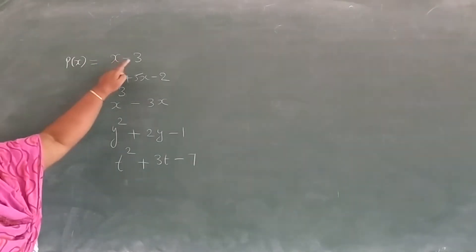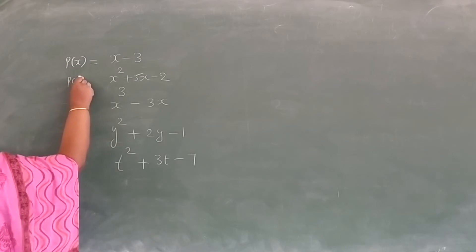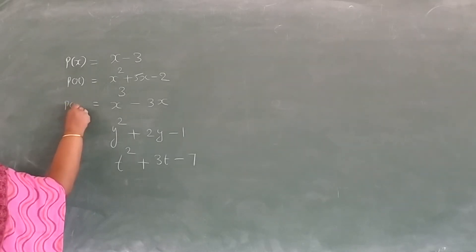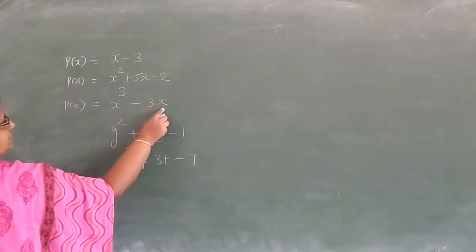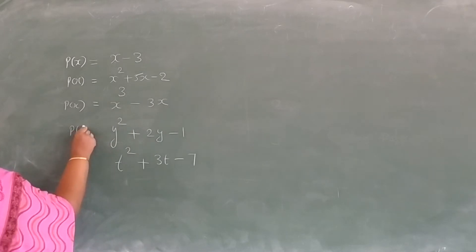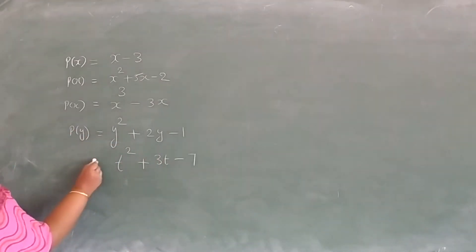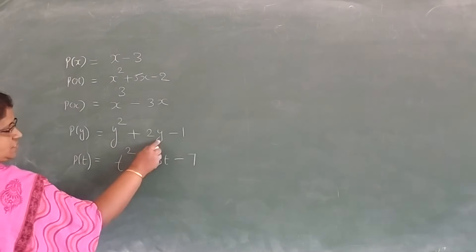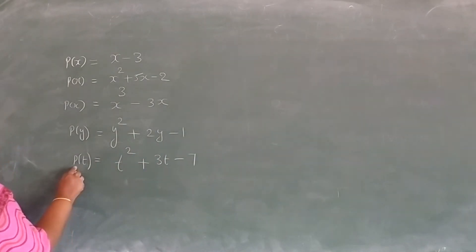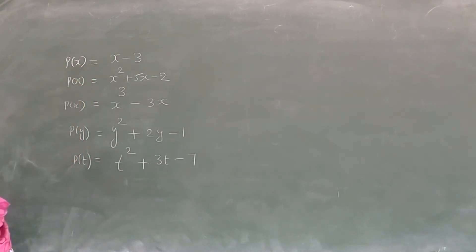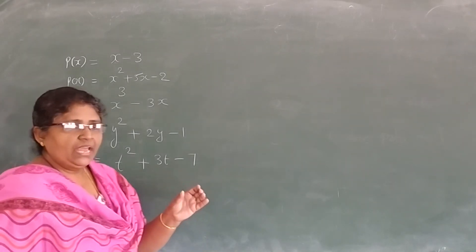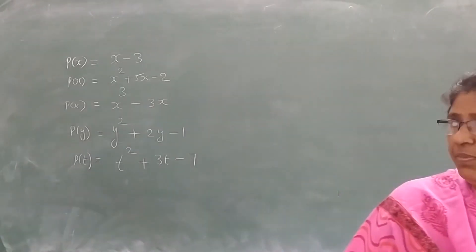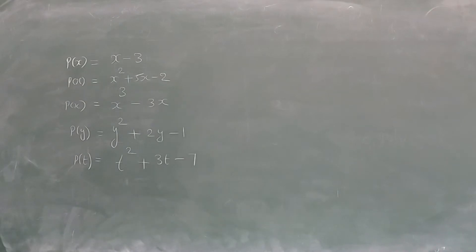So p(x) = x minus 3. This is p(x) = x square plus 5x minus 3. This is p(x) = x cube minus 3x. This is p(y) equal to y square plus 2y minus 1. This is p(t) equal to t square plus 3t minus 7. So on the basis of the variable, we write the name of the polynomial. For representing a polynomial, we generally use p bracket with the concerned variable.